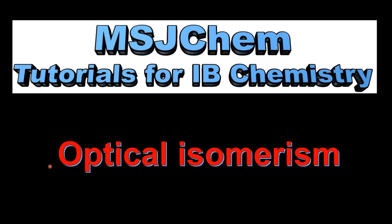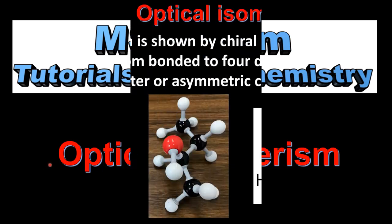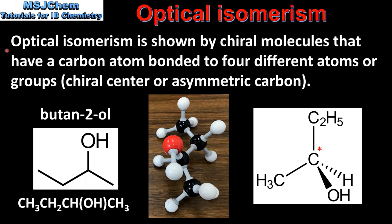This is MSJChem. In this video I'll be looking at optical isomerism. Optical isomerism is shown by chiral molecules that have a carbon atom bonded to 4 different atoms or groups. This carbon atom is sometimes called a chiral centre or asymmetric carbon. Note that a chiral centre is also sometimes called a chiral carbon atom.